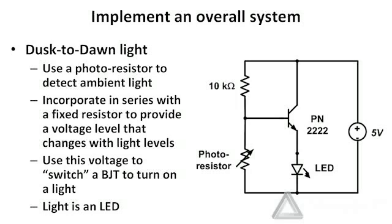In this overall circuit, once we wire it up, we'll see that when the room gets dark, the voltage at the BJT base will go high and the LED will light up. When the room is light, the LED will go out.